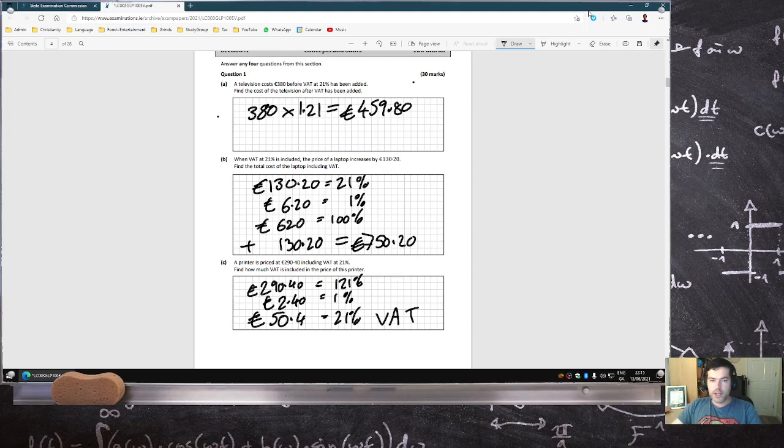Let's just double check that. Television costs 380, and then you add on 21%. When VAT is included, the price of the laptop increases by that much. So that's 21%, 1% and 100%. Find the total cost. So add on the VAT. The printer's price at that includes VAT. So that's 121%. So that's 1%. Find how much VAT is included. Yeah, okay.